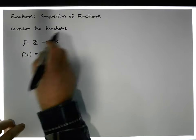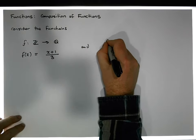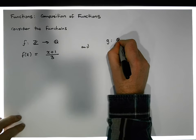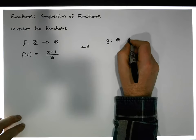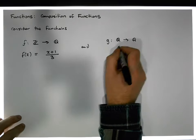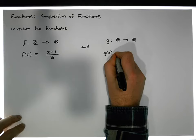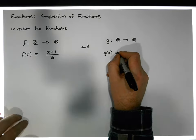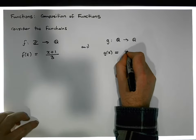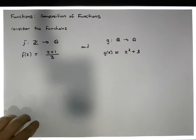Now let's consider the function g. The function g takes rational numbers and maps them into rational numbers, and it's defined by g(x) = x² + 3.